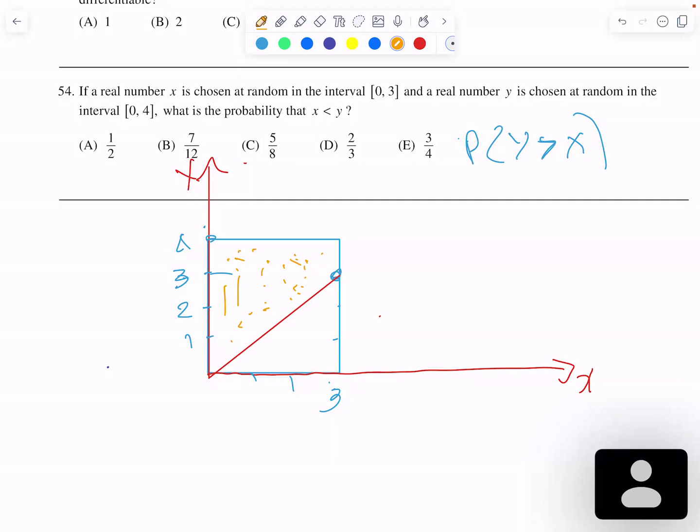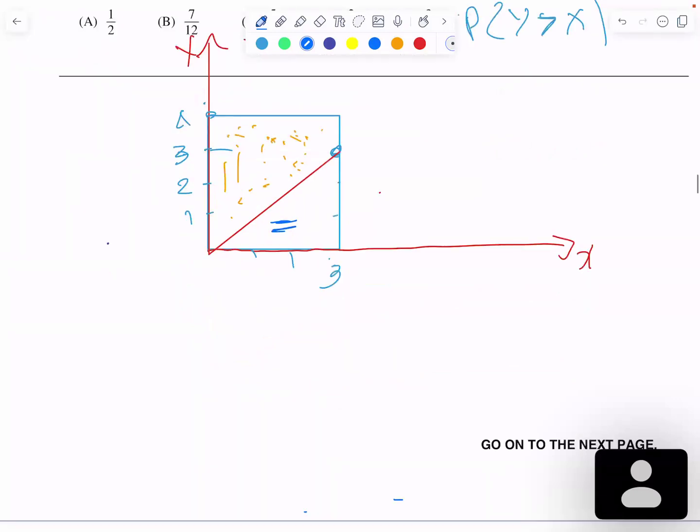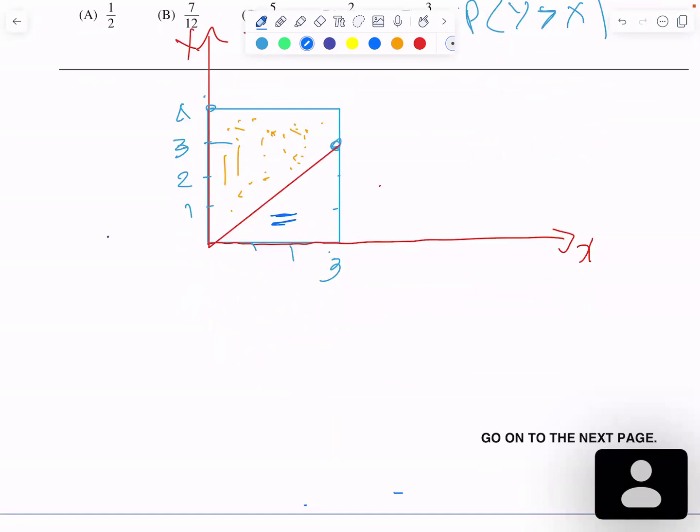We find the area of that region and divide by 12, which is the area of the whole rectangle. Now the area of the top region is going to be the whole rectangle minus this triangle here.